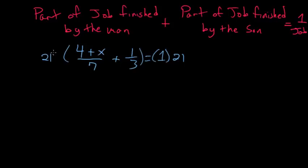And on the left, distributing this 21, 21 divided by seven is just three. So we have three times this four plus x. And then one-third times 21 is just seven, so we have plus seven,